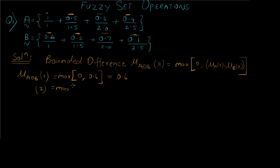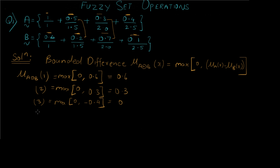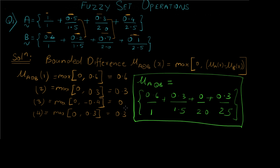For the second value: max(0, 0.5 − 0.2) = max(0, 0.3) = 0.3. For the third value: max(0, 0.3 − 0.7) = max(0, −0.4) = 0. For the fourth term: max(0, 0.4 − 0.1) = max(0, 0.3) = 0.3. The comparison is always made with 0 and we take the maximum. That is our final answer for bounded difference.